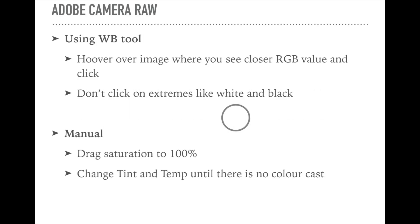Summary of fixing white balance in Adobe Camera Raw: Technique one — use the White Balance tool, hover over the image to find a pixel with closer RGB values, and click it. Make sure not to click extreme values like pure white or black. Technique two — increase saturation to 100 percent, increase vibrance to around 30, then change tint and temperature until there is no color cast.